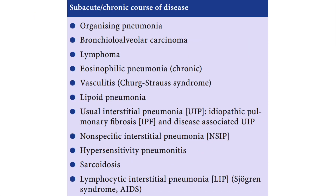The acute causes of consolidation are pulmonary infection (predominantly bacterial), pulmonary edema, pulmonary hemorrhage, ARDS, and acute interstitial pneumonia — similar to ground glassing. Subacute and chronic causes include organizing pneumonia, bronchial carcinoma, lymphoma, eosinophilic pneumonia, and vasculitis. UIP and NSIP are more associated with ground glassing, so consolidation is very rare in those cases, though it can still occasionally be seen.